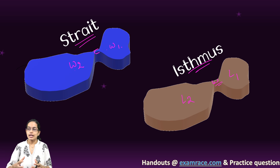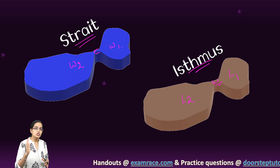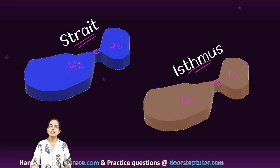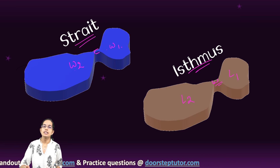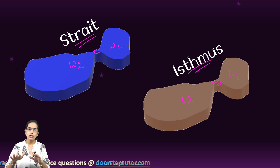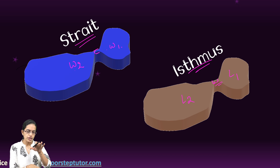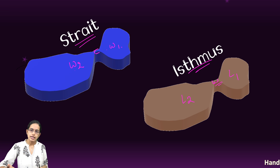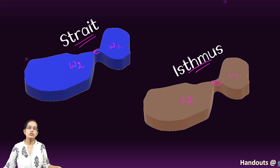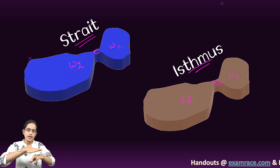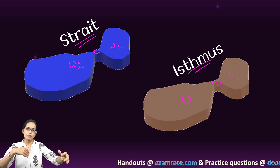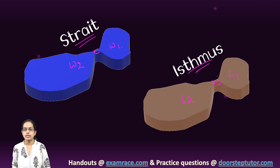Now, understanding how straits are formed. Straits could be formed in various ways. A very good example is tectonic subduction — because of tectonic subduction or subsidence, a strait formation would occur. Another example is when the water level overrises and as a result two water bodies get merged onto one another.